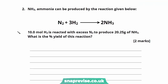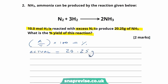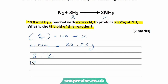Now, moving on to question 2. NH₃, ammonia, can be produced by the reaction given below. 10 moles of hydrogen is reacted with excess nitrogen to produce 20.25 grams of ammonia. What is the percentage yield of this reaction? Again, we can write out the equation: actual ÷ theoretical × 100 = percentage yield. The actual yield is 20.25 grams. We're told there's excess nitrogen, so hydrogen is the limiting factor. From the reaction, 3 moles of hydrogen reacts to form 2 moles of ammonia — that's a 3 to 2 ratio. So if we have 10 moles of hydrogen, we produce (10 ÷ 3) × 2 = 6.667 moles of ammonia.